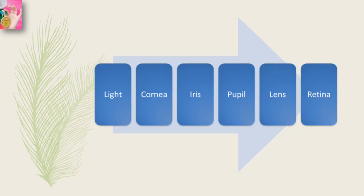Now let's trace the passage of light from the eye to the retina using the cat example. Light waves reflected from the yellow and white tabby cat enter your eye, passing through the cornea, pupil, and lens. The cornea is a clear membrane covering the front of the eye that helps gather and direct incoming light. The sclera — the white portion of the eye — is a tough fibrous tissue that covers the eyeball except for the cornea.